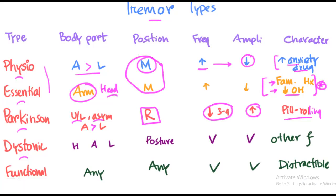In dystonia, the tremor can involve the head, arms, or legs. It usually occurs in a specific posture. And the frequency and amplitude are variable, and there may be other features of dystonia.